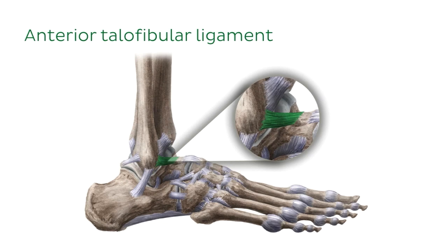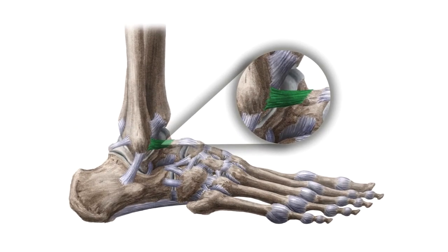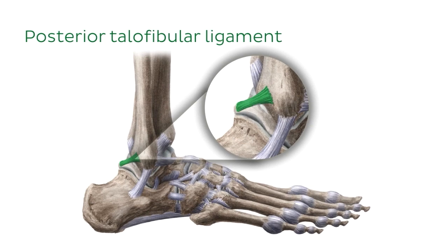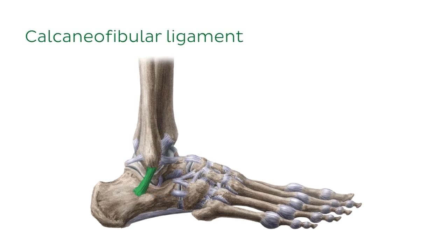This naming might seem a little backwards compared to the tibial collateral ligaments. When naming the tibial ligaments, the tibia portion came first — for example, tibiotalar. When naming the lateral or fibular ligaments, the fibular portion comes last, as in anterior talofibular ligament. On the posterior aspect of the joint, there is another ligament running from the fibula to the talus, called the posterior talofibular ligament. Finally, the last piece of the fibular collateral ligament runs from the fibula to the calcaneus and is called the calcaneofibular ligament.